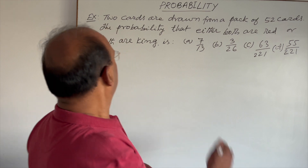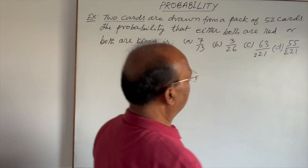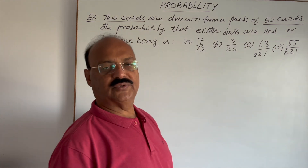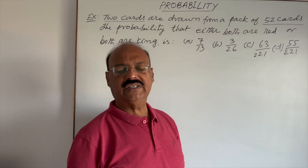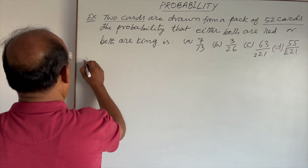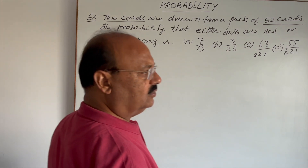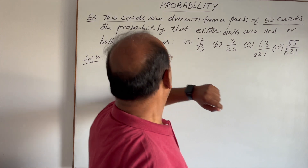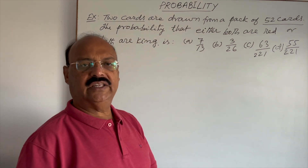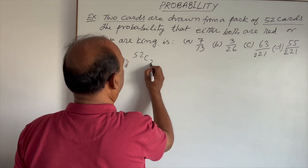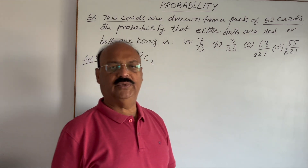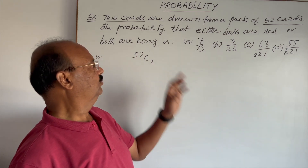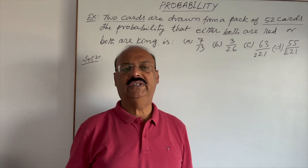We have to draw two cards out of 52 cards. With the help of this information given in the question, we can easily find out the number of elements in the sample space. The sample space is the collection of all possible outcomes. Out of 52 cards we have to select two cards, so the sample space will be 52C2.